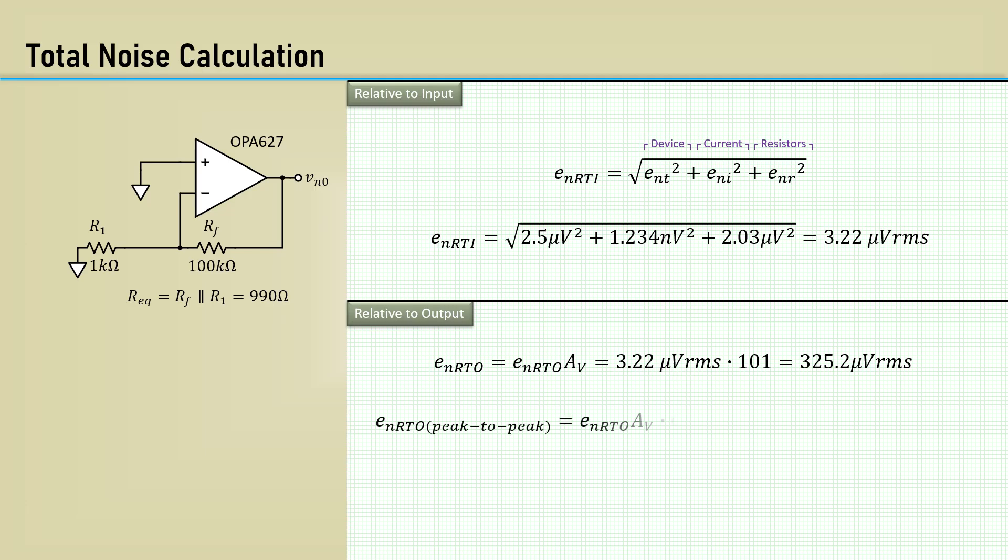We then multiply by 6 to get the peak-to-peak estimate, which is 1.95 millivolts peak-to-peak.